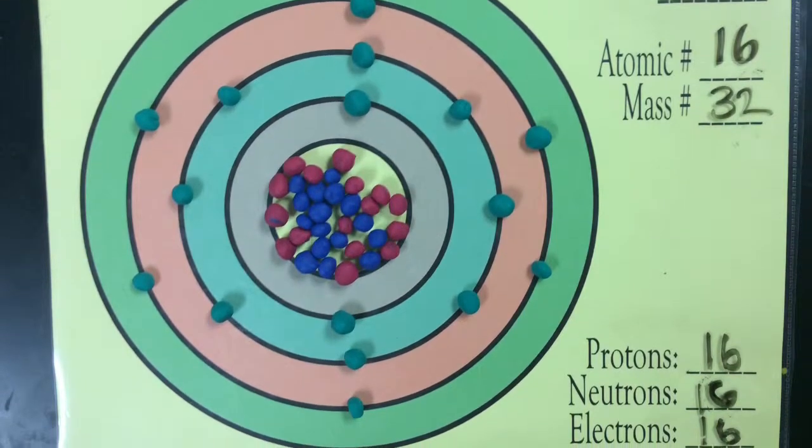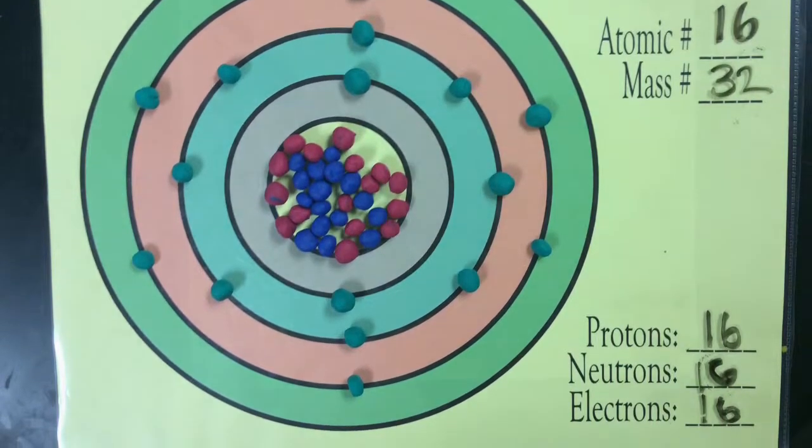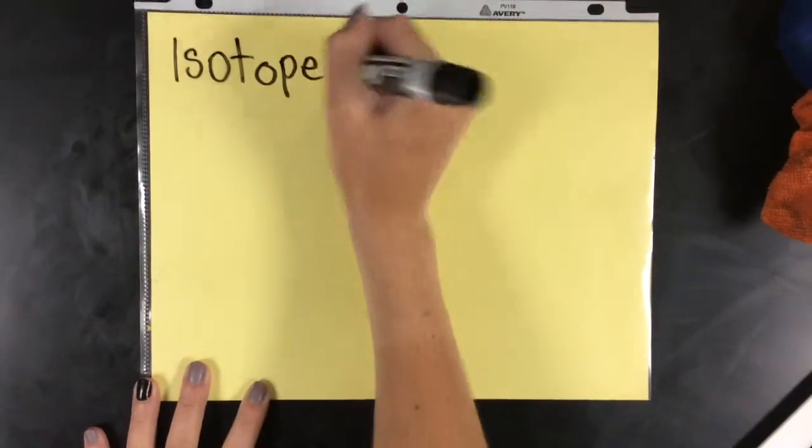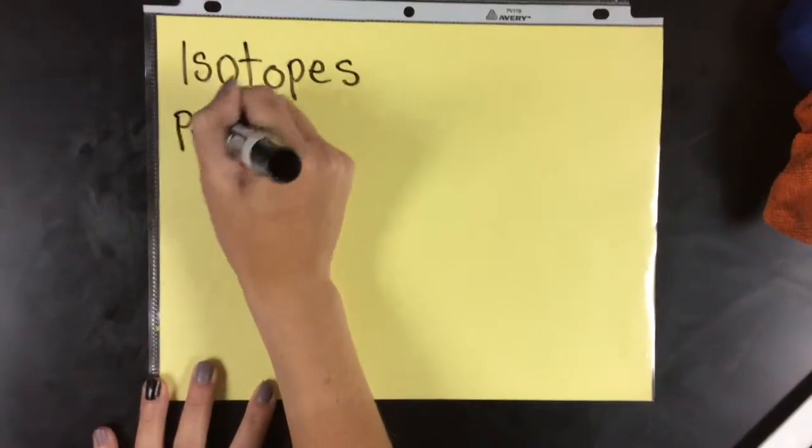However, the question we want to ask is, how is this different from an isotope? Well, isotopes are different from normal atoms in that they have a different number of neutrons than protons.